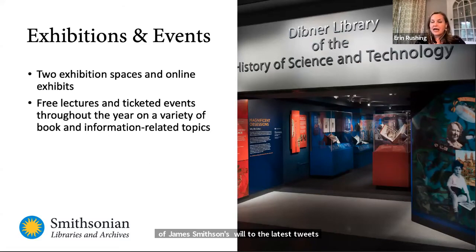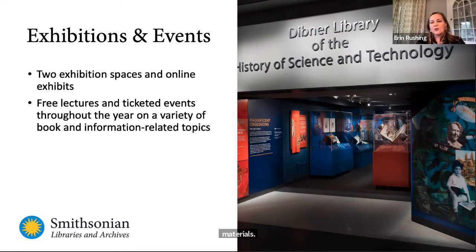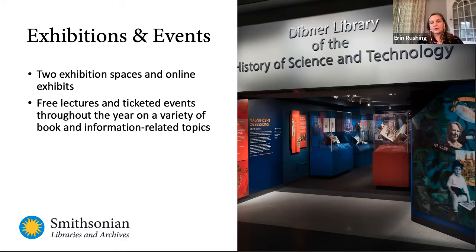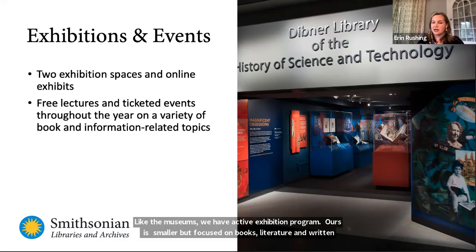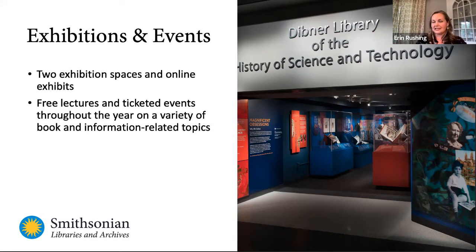Like the museums, we have an active exhibition program focused on books and literature in the written world. We have two exhibition spaces — one in the National Museum of American History and another smaller space in the National Museum of Natural History. To complement these exhibitions and other programs, we host free events throughout the year, including online lectures. We have two events coming up in the next month: a monthly Film Fest series on September 30th, and a talk by the curators of our exhibition, Magnificent Obsessions: Why We Collect, on October 5th — both free, online, and recorded.